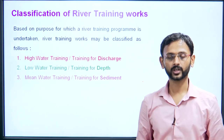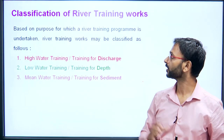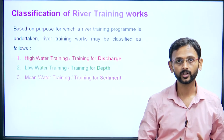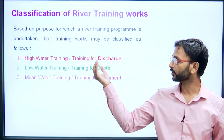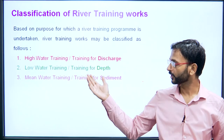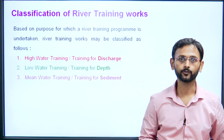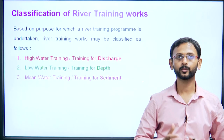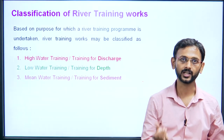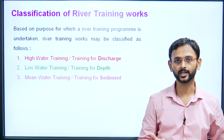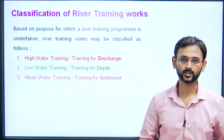Based on the purpose for which a river training program is undertaken, river training works can be classified as: high water training — training for discharge; low water training — training for depth; and mean water training — training for sediments. In the next class, we will discuss in detail what training for discharge, depth, and sediment means, and how training a river achieves each purpose.